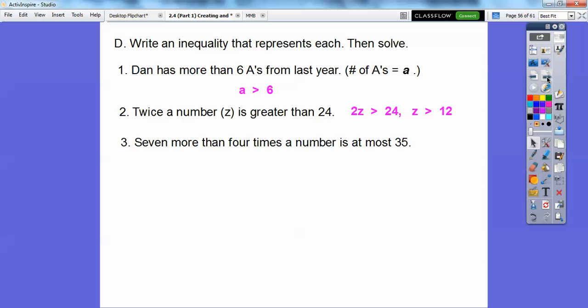So seven more than four times a number is at most 35. More than is addition, so seven more than, seven plus, four times the number, we'll just call it 4X, seven plus 4X, at most. So at most is going to be less than or equal to.